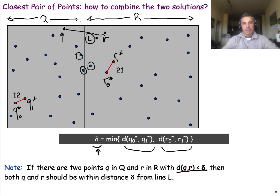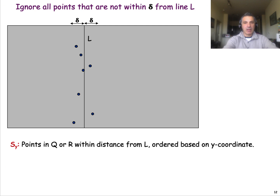Why is that the case? If we assume that Q is at a distance more than delta from the vertical line, then given that point R is on the other side of the line, the distance between Q and R would certainly be more than delta. So what this means is that we can now focus only on the points in Q and R that are within delta from this vertical line L. We don't have to consider points further away than delta.